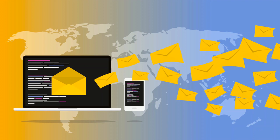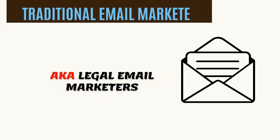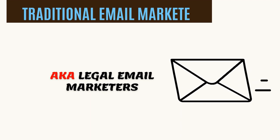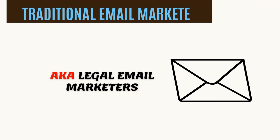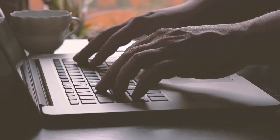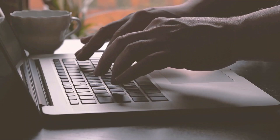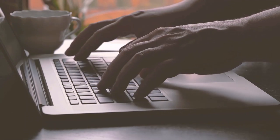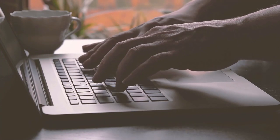There are basically three types of email marketers, and I will explain all of them to you. The first type is the traditional email marketers, also known as the legal email marketers. They simply collect email addresses legally — they could have a website where they promote a particular thing and people subscribe to their email list. In other words, people give them permission to send them emails. These marketers collect email addresses legally and market their services by sending emails to people who have given them that permission.